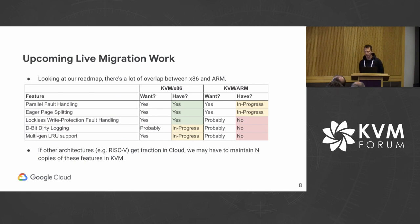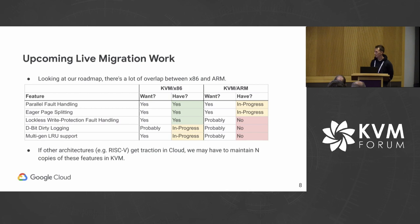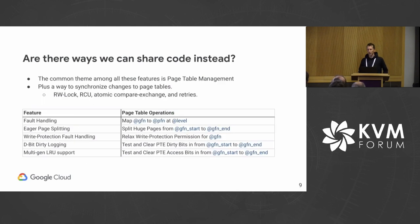Looking at the features on x86 and what's upcoming, there's a lot of overlap between what we have on x86 and what we want to do on ARM: parallel fault handling, eager page splitting, lockless write protection fault handling. The same applies for d-bit-based dirty logging and multi-gen LRU support. If other architectures like RISC-V gain traction in cloud and need to support live migration, we expect to see similar bottlenecks requiring very similar software solutions. So we may end up having to maintain N copies of these features — is there a way to share code instead?